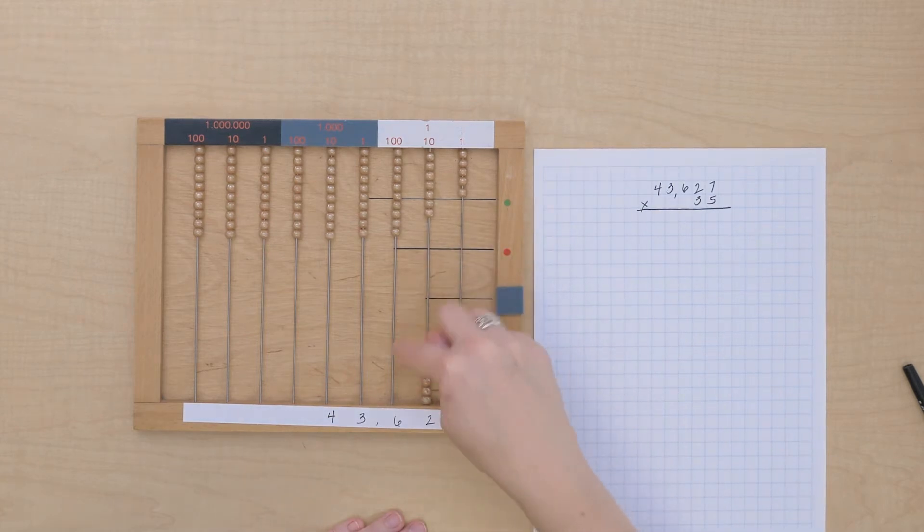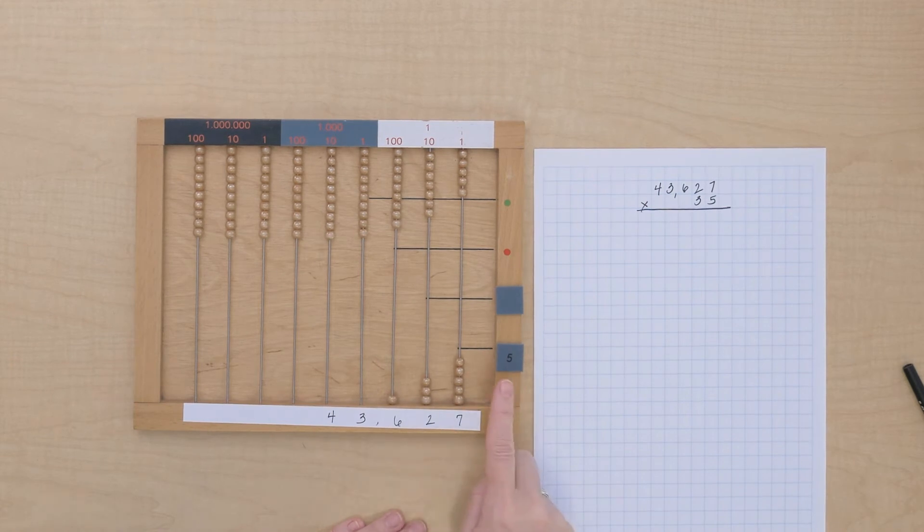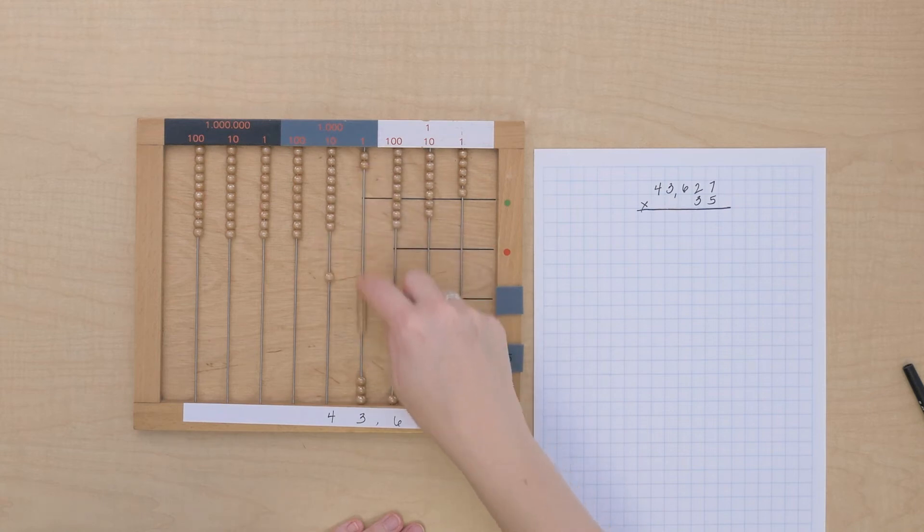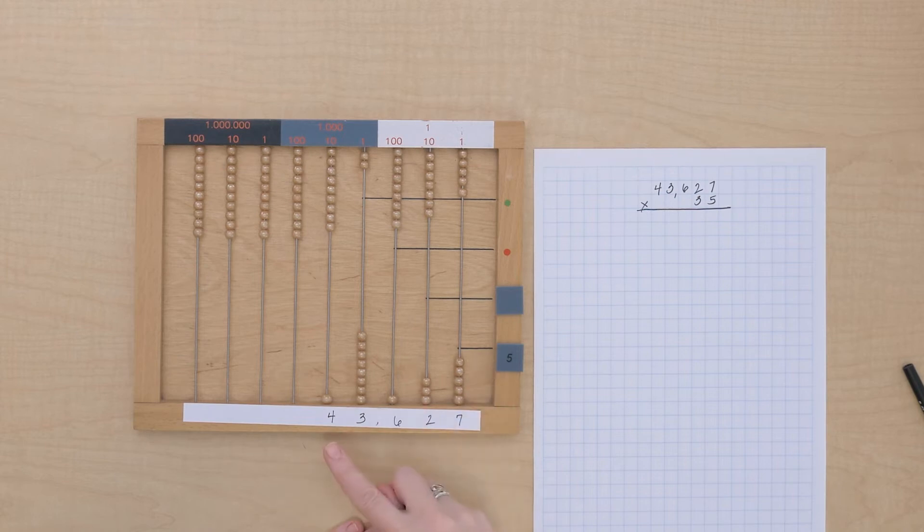2 times 5 is 10 tens, so 100. 6 times 5 is 30 hundreds, so 3,000. 3 times 5 is 15,000. And 4,000 times 5 is 20,000, so 200,000.